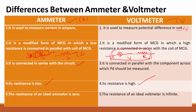The resistance of the ammeter is very low, and the resistance of the voltmeter is very high. The resistance of an ideal ammeter is zero, but the resistance of an ideal voltmeter is infinite. These are the basic differences between ammeter and voltmeter.